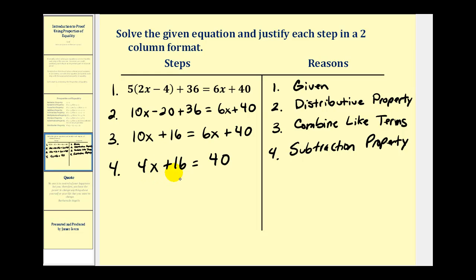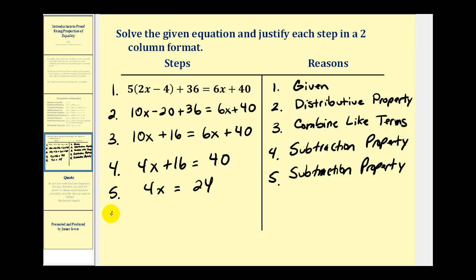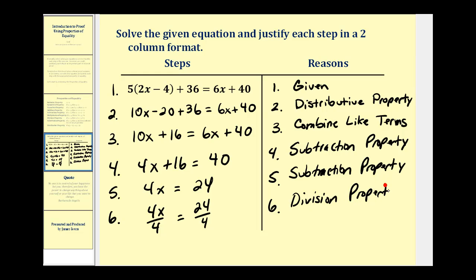For the next step, we're going to divide both sides by four. The justification is the division property of equality. Our last step is just to simplify, so we would have x equals 6, and our justification will be simplification.